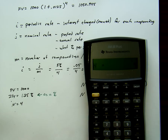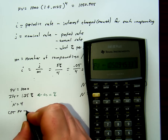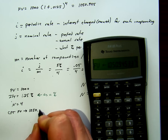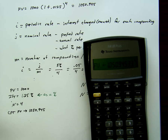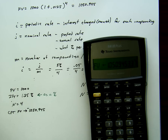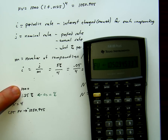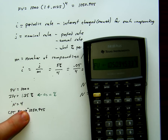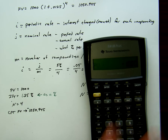Then we press the Compute button and compute the future value, which gives $1,050 — exactly what we had before. This comes out negative due to cash flow convention: a negative amount is what you pay, a positive amount is what you receive. If we put $1,000 in as a negative present value and compute the future value, we get a positive value out.